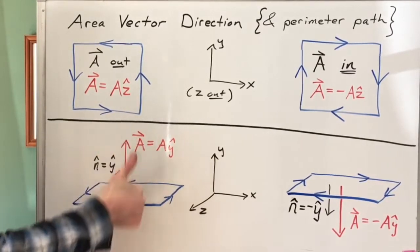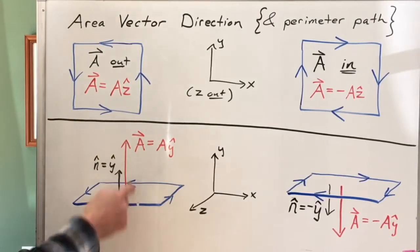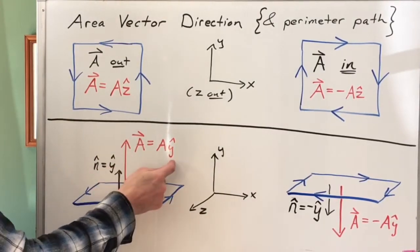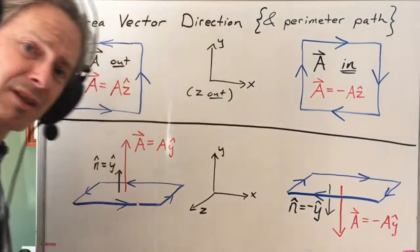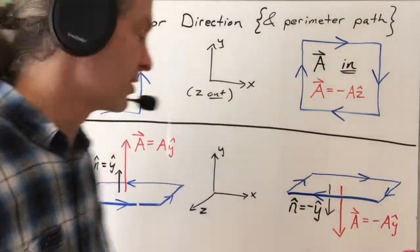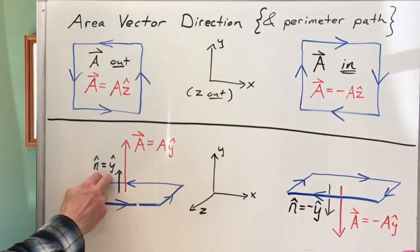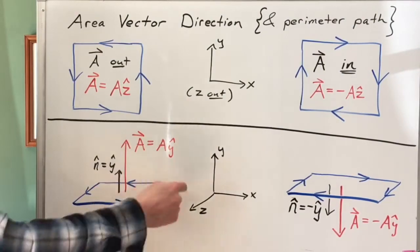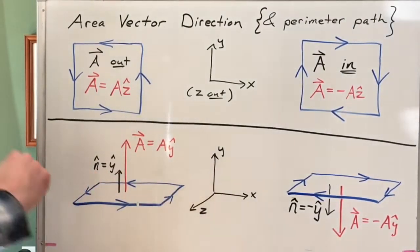This is my right hand, again, in the direction of the area vector. So my area vector will be in the positive Y direction. Or if I want to think in terms of my normal, my unit normal vector, normal unit vector, my normal unit vector corresponding to this area and this pathway around that area would be the Y hat direction.